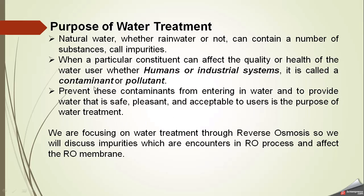What we want to achieve from water treatment is water which is safe for use in specific environments, whether for human beings or for industrial systems like boilers and cooling systems. The water treatment programs revolve around this aim. Reverse osmosis is a very important piece of equipment, and before proceeding further, it is important to look at water quality parameters.